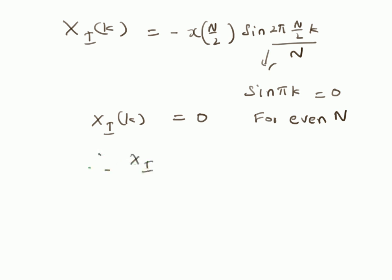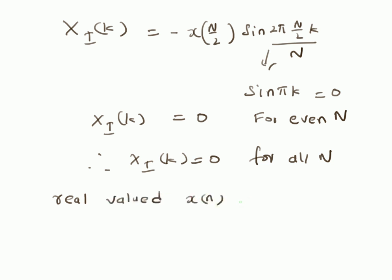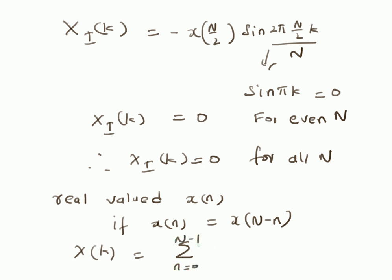Therefore the imaginary component is equal to 0 for all values of N. Hence, for a real-valued x(n) that satisfies the definition of the even function for N-point sequences — that is, x(n) = x(N-n) — the DFT is equal to the summation from n=0 to N-1 of x(n)·cos(2πnk/N). That is, the DFT is purely real: it is only a cosine transform of the data. Thanks for watching.